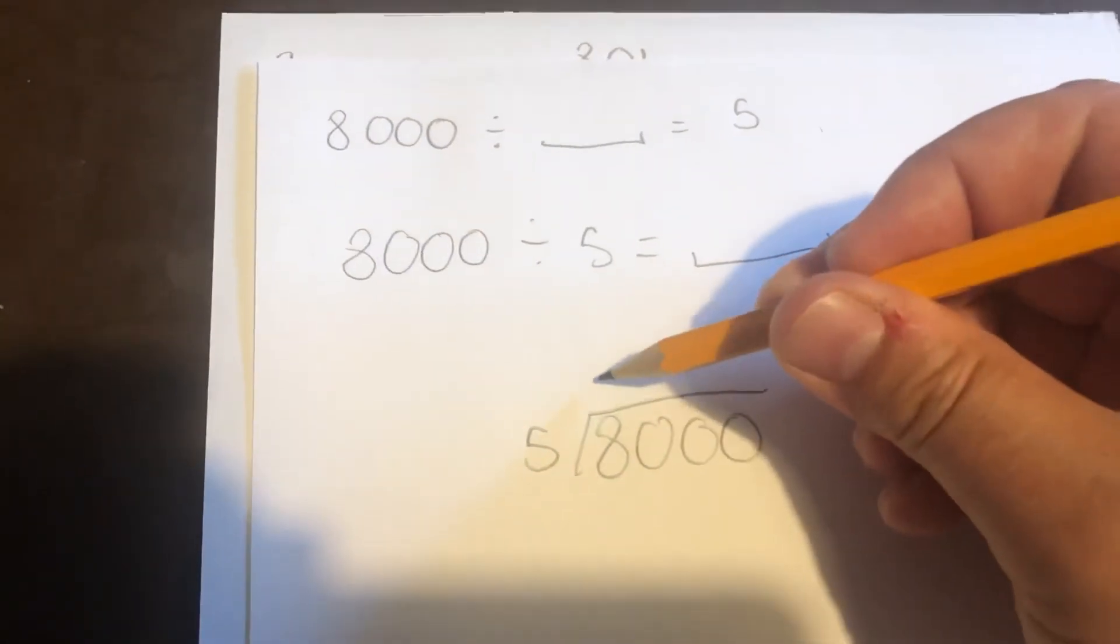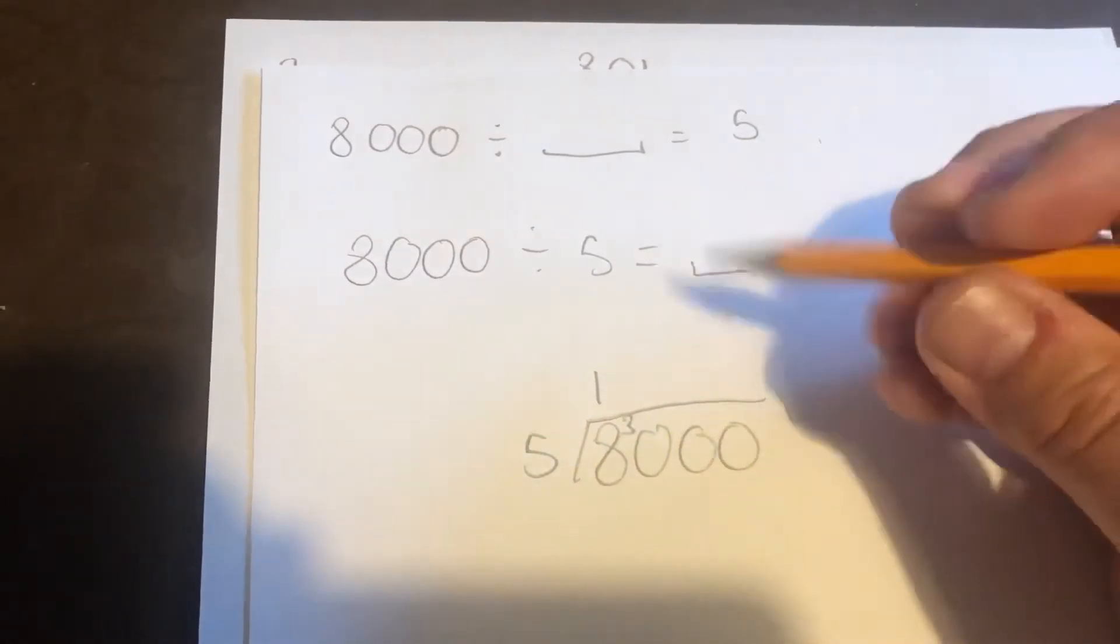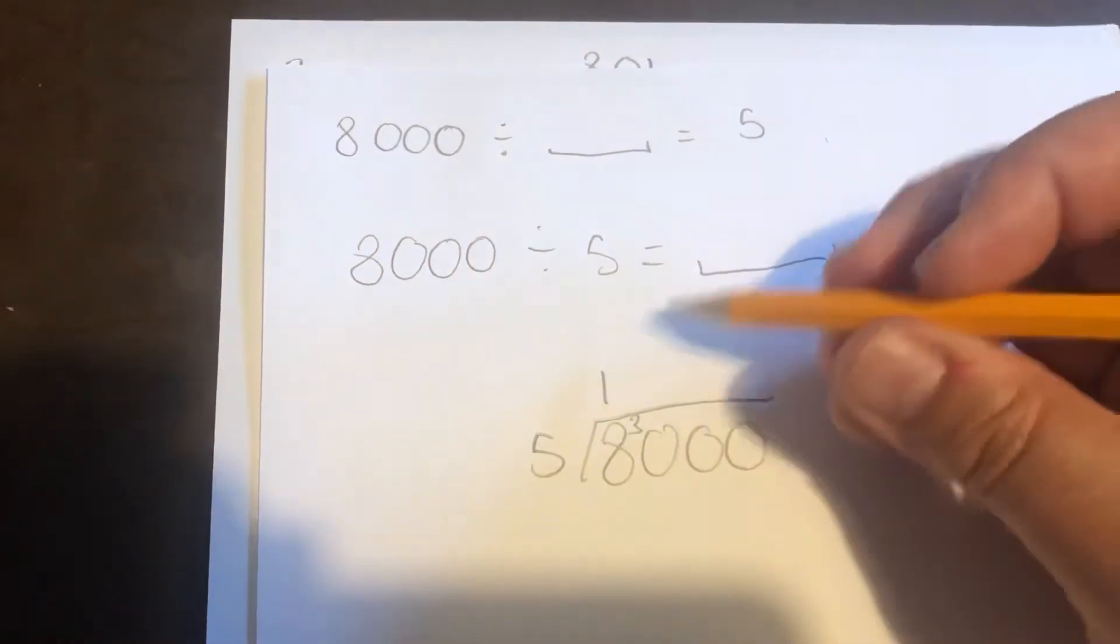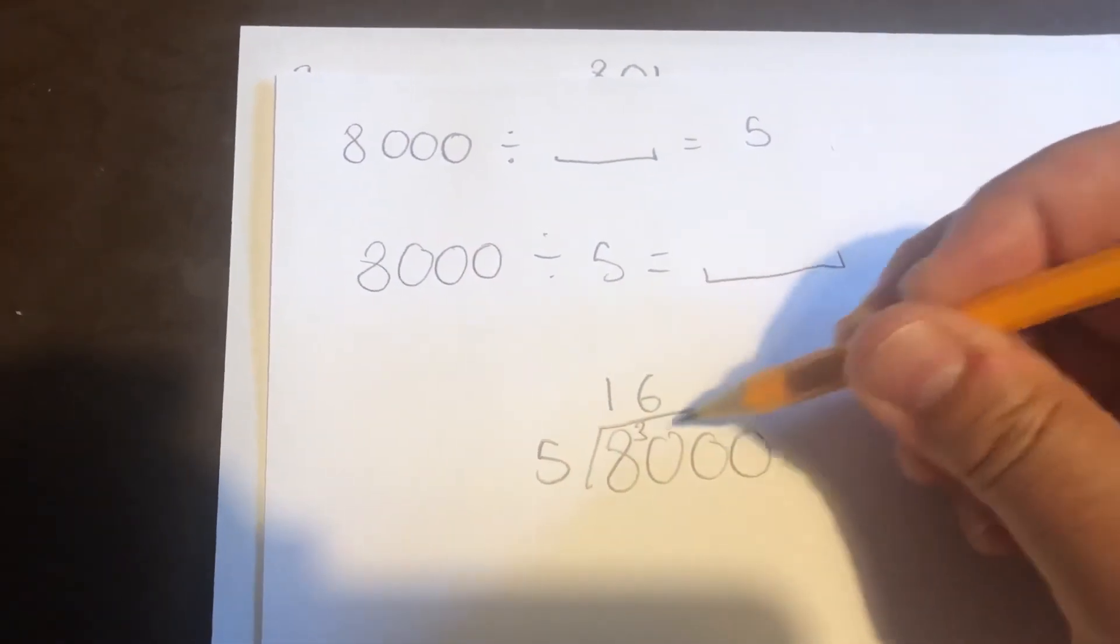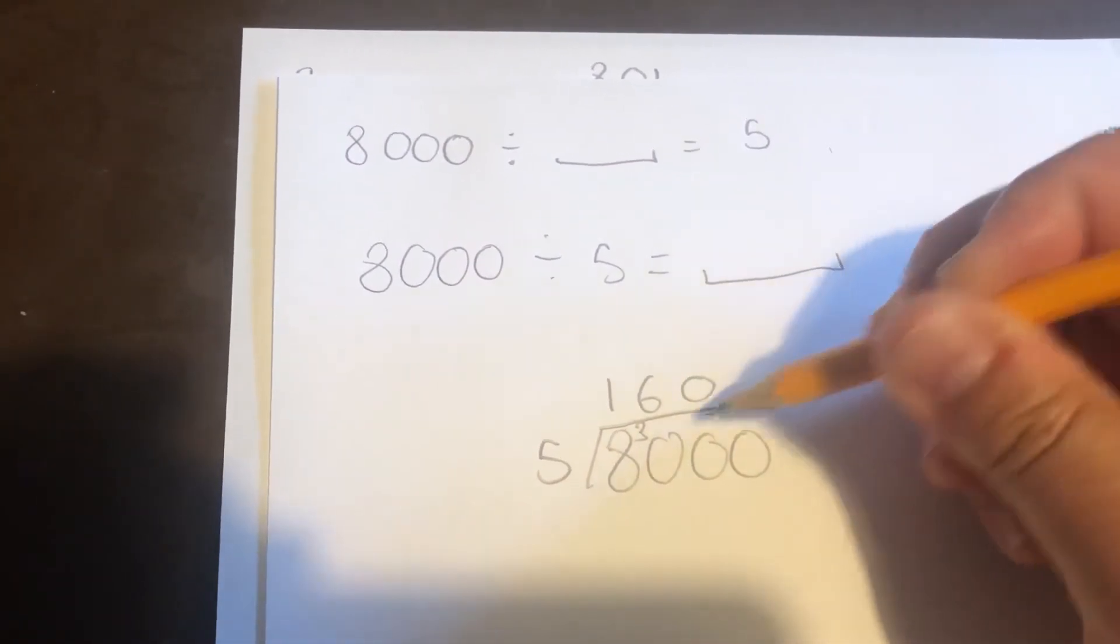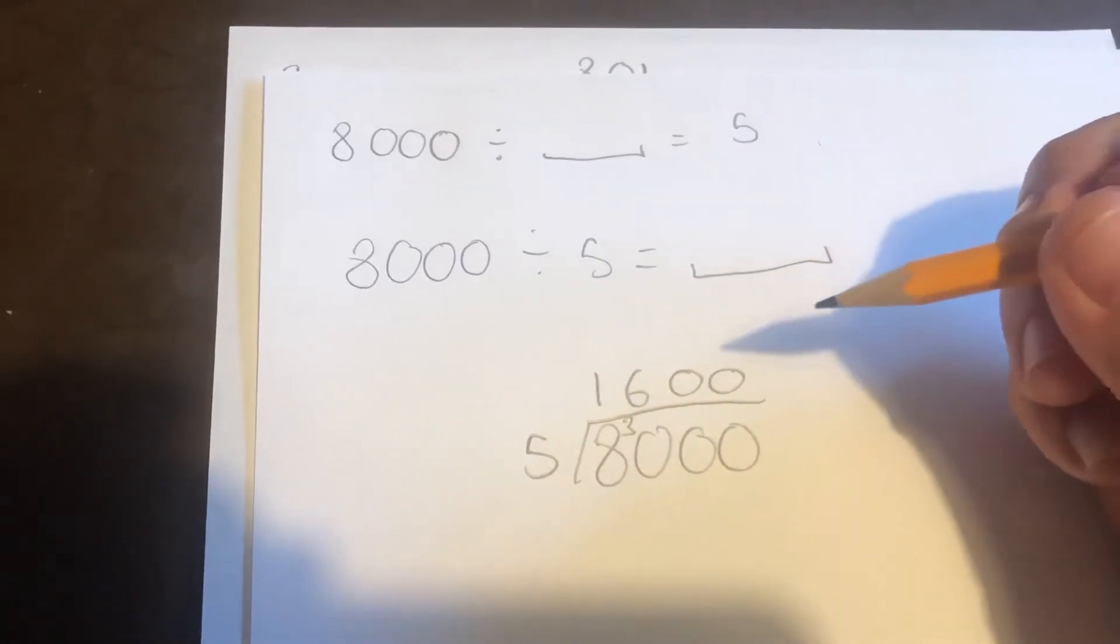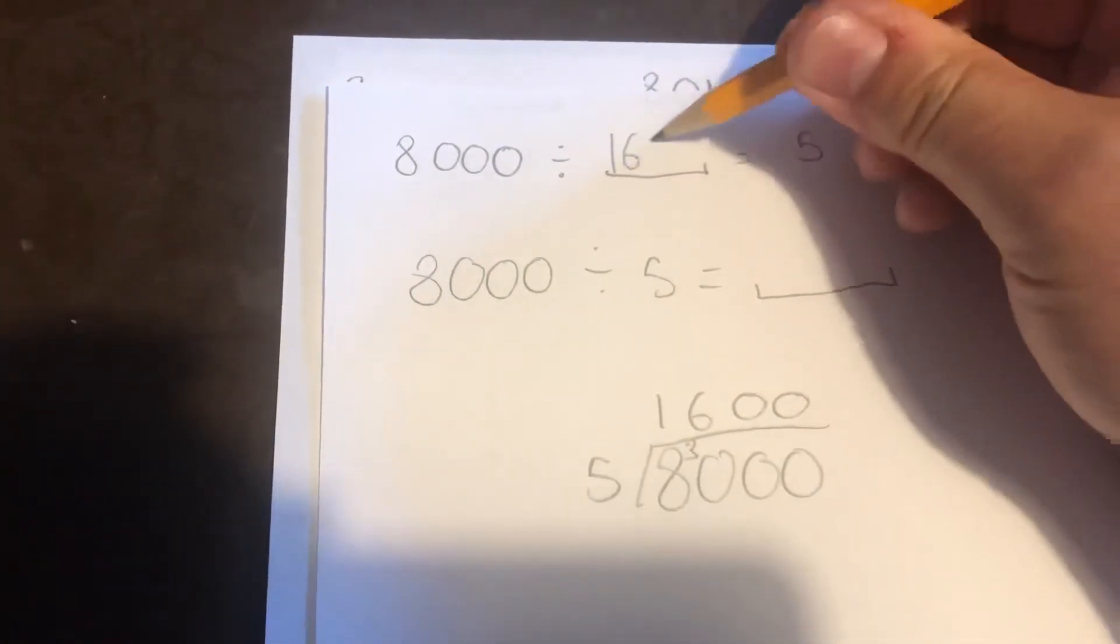How many 5's are in 8? There are 1, remainder 3. How many 5's in 30? There are 6. How many 5's in 0 is 0. How many 5's in 0 is 0. So my missing answer is 1,600.